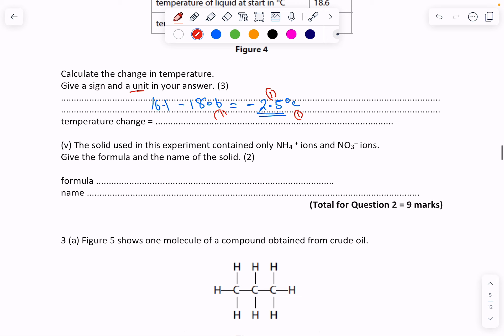The last little bit in this question: the solid used in the experiment contains these ions, give the formula. Okay, so we have NH4+ that wants to make one bond, and we've got NO3- ion also wants to make one bond. They're going to swap over, so this means my formula will be NH4 gets number one, then write it down NO3. This is called ammonium, that's the NH4 bit, and then the NO3 is nitrate, so ammonium nitrate.